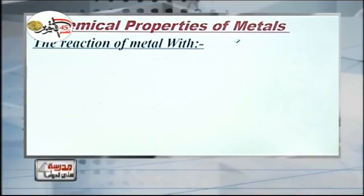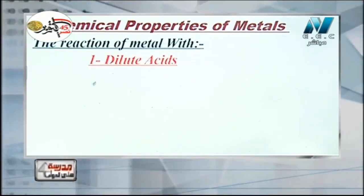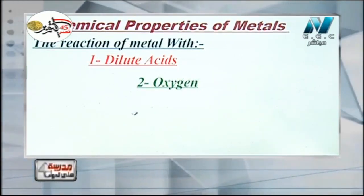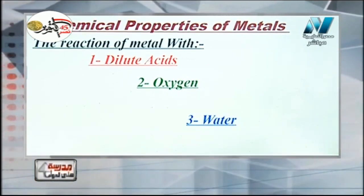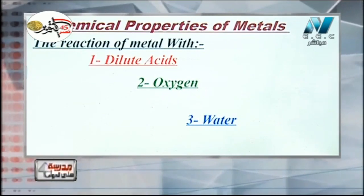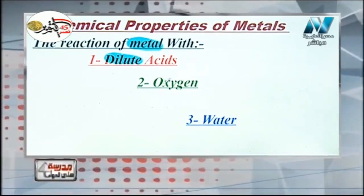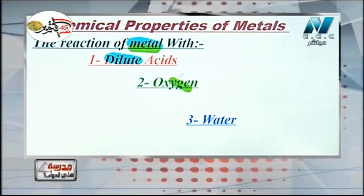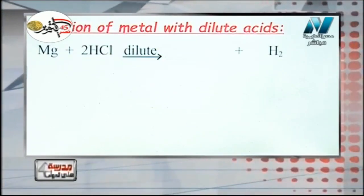Let's start with the first part of our lesson: the chemical properties of metals during chemical reactions. We have three types: number one, the chemical reaction of metals with diluted acids; number two, with oxygen; and number three, with water.